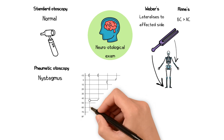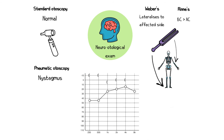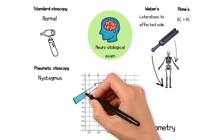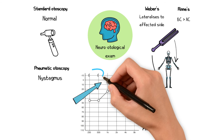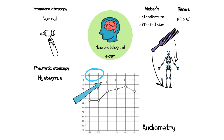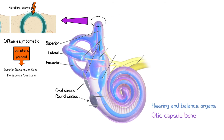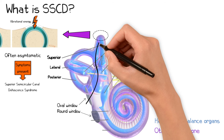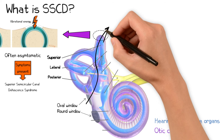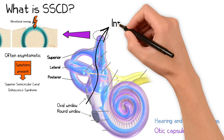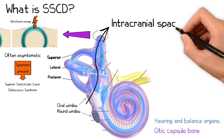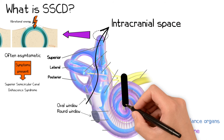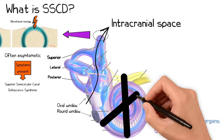An audiogram may show a low-frequency conductive hearing loss or supranormal thresholds, particularly on bone conduction. The reason for the conductive hearing loss is because vibrations entering the ear canal and the middle ear are abnormally diverted through the superior canal and into the intracranial space instead of being registered by the organ of hearing.